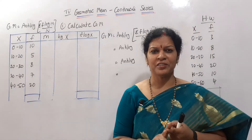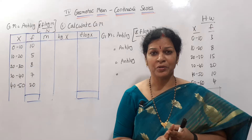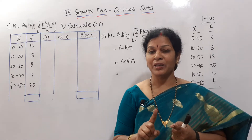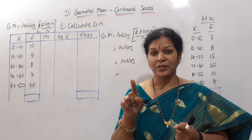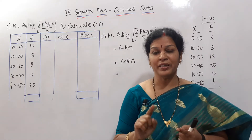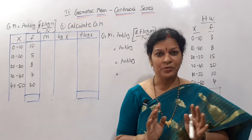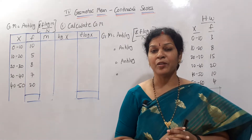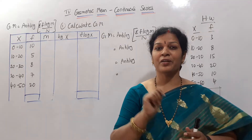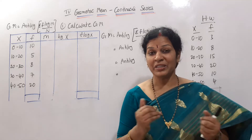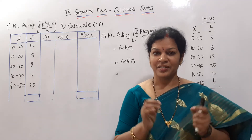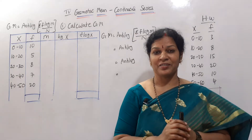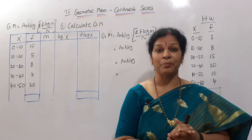What was the formula in individual series? Geometric mean is equal to anti-log of sigma log x by n. For discrete series, geometric mean is equal to anti-log of f into log x by n. Now in continuous series, it is anti-log of f into log m by n, where m represents the mid value.